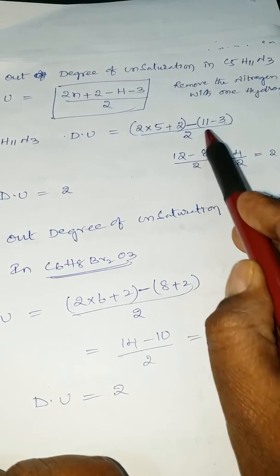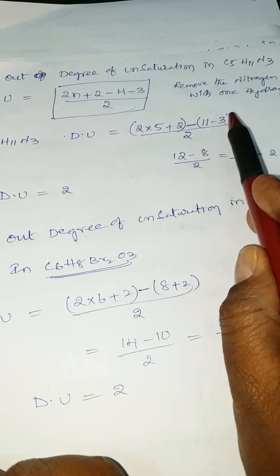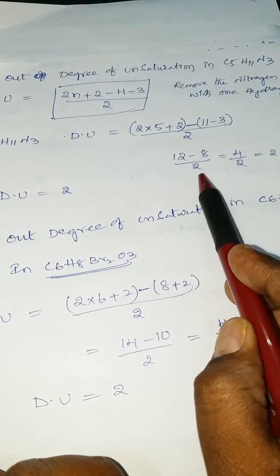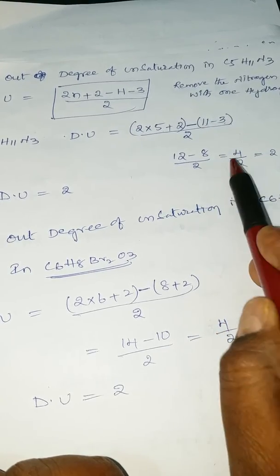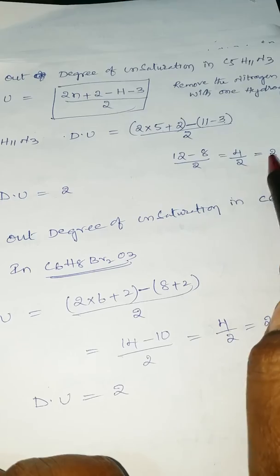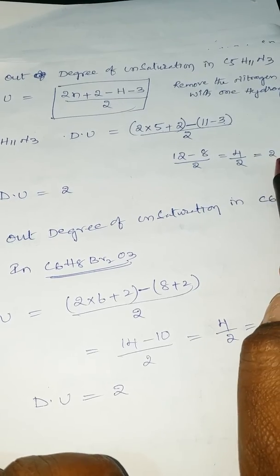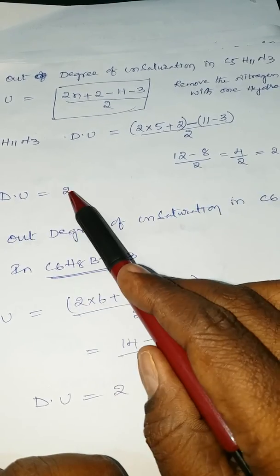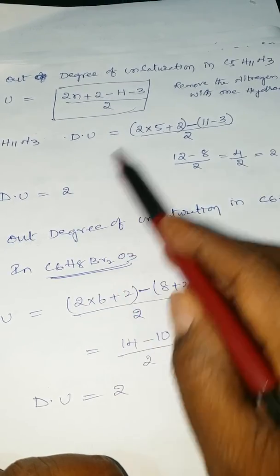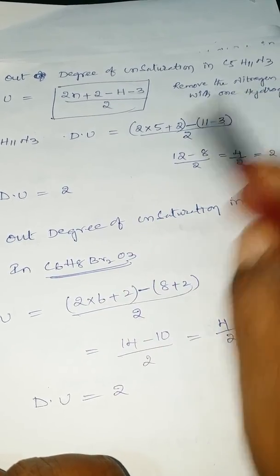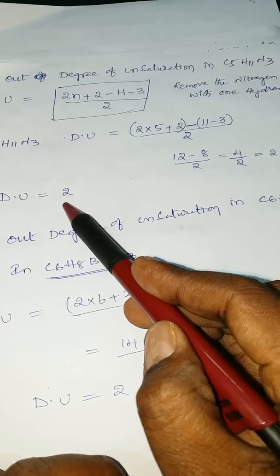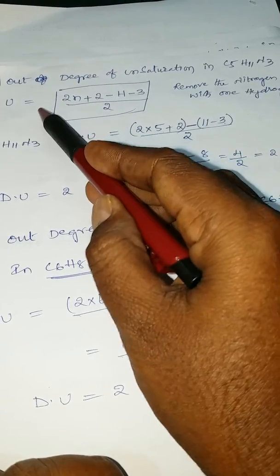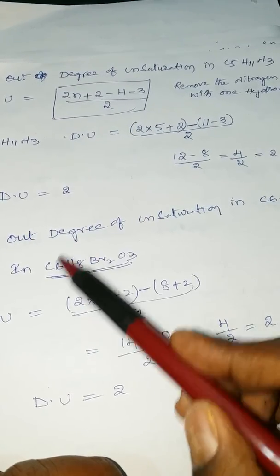So that gives us 2. The degree of unsaturation for the given molecular formula C5H11N3 is 2. This is the first problem. Now, the second question: